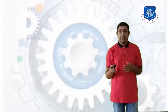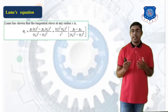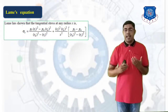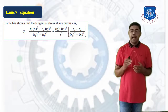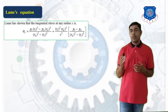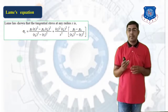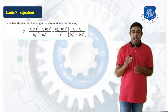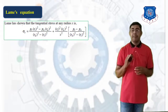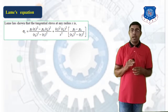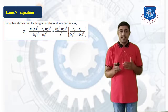According to Lame's equations, the tangential stress at any radius x is: sigma T = [Pi × Ri² − Po × Ro²] / (Ro² − Ri²) + [Ri² × Ro²] / x² × (Pi − Po) / (Ro² − Ri²). This is the general Lame's tangential stress equation.